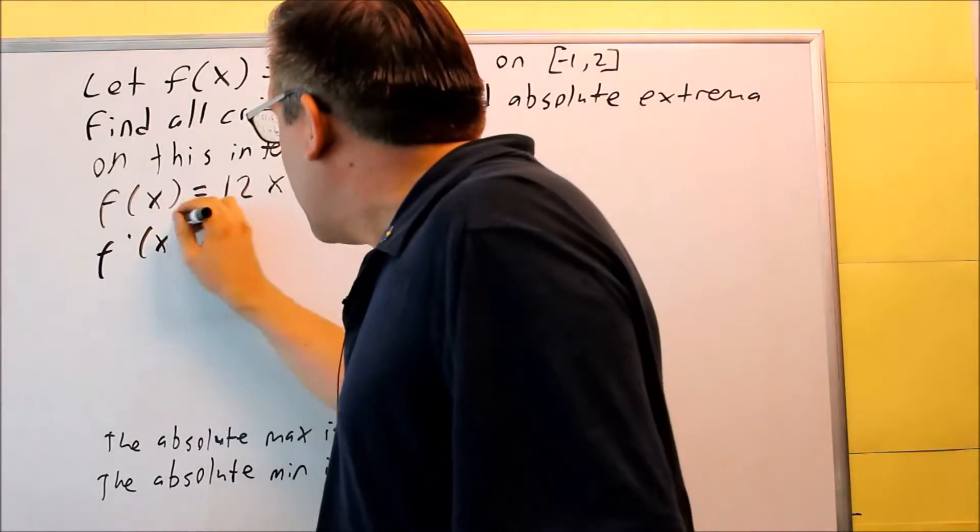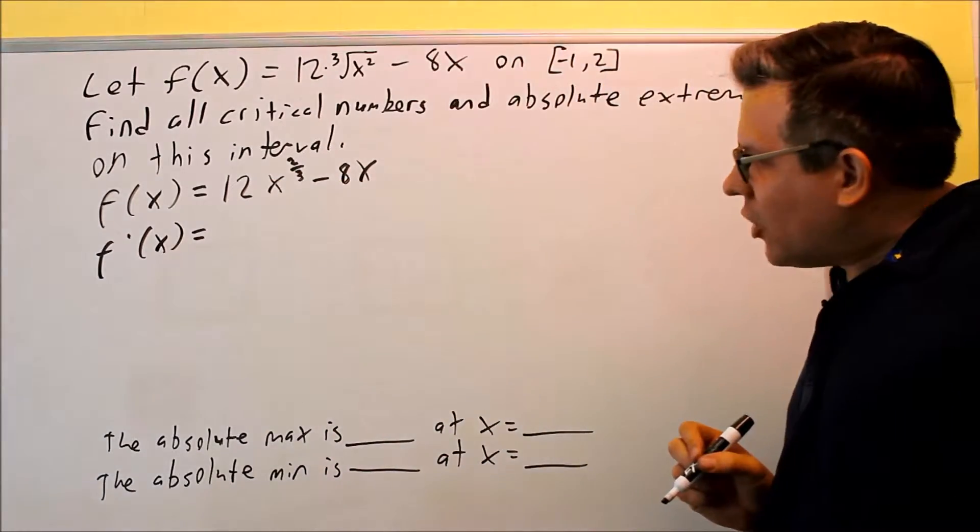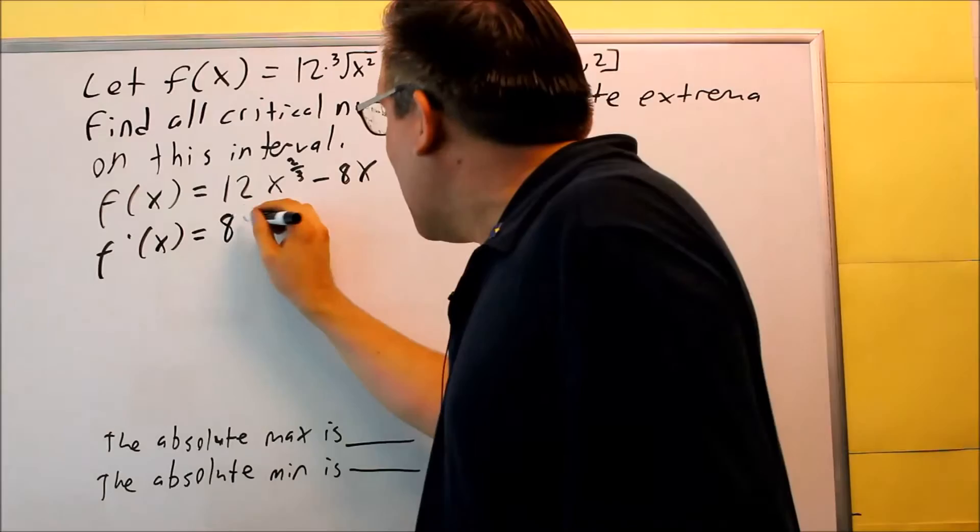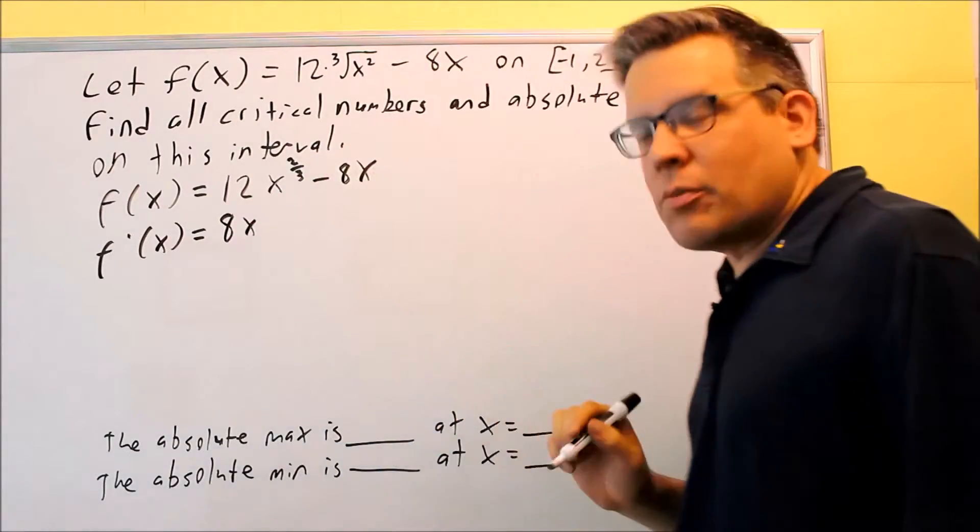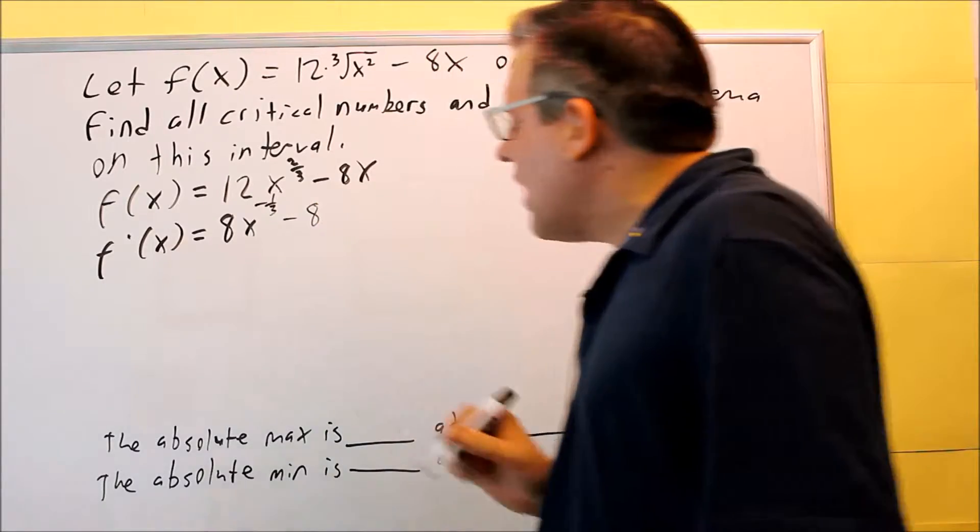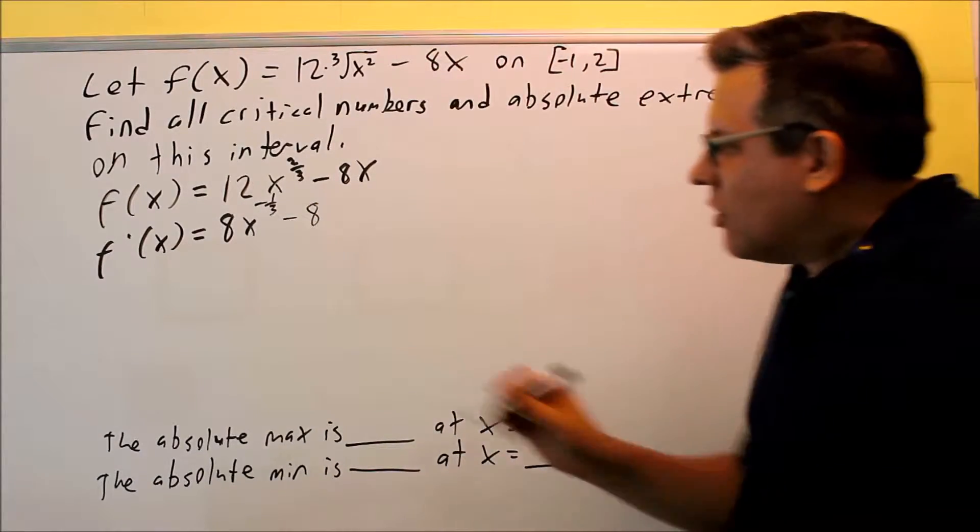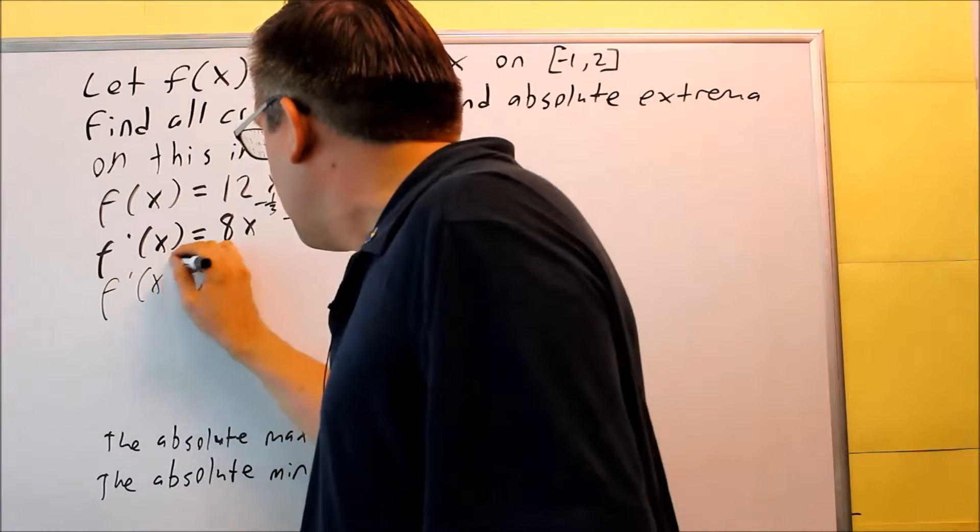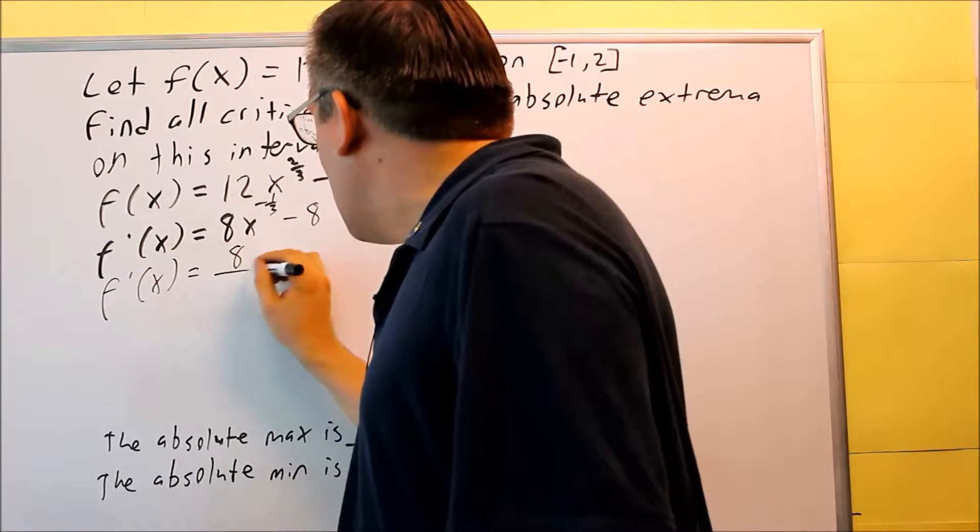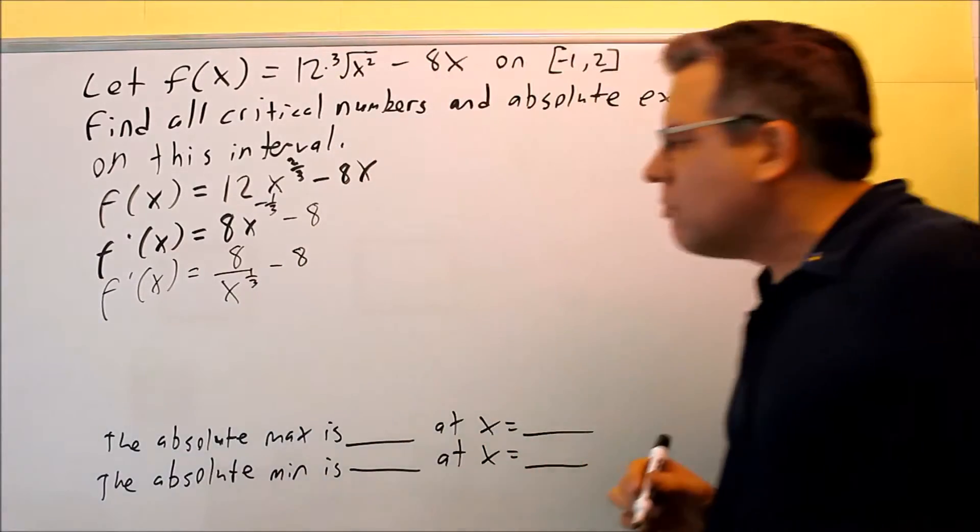So now we're going to apply the power rule. 2/3 multiplies by the 12, you're going to get 8x. Subtract 1 from the power, you get negative 1/3, and then minus 8. The derivative of 8x is just 8. We can rewrite this as 8 over x to the 1/3, and then minus 8.